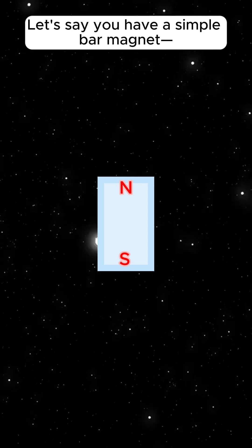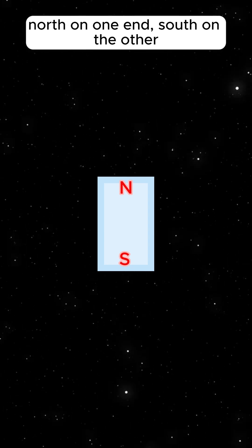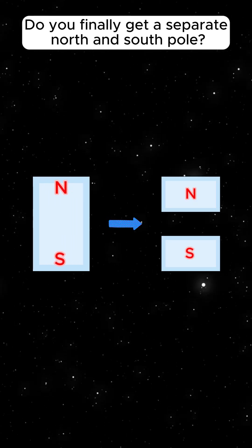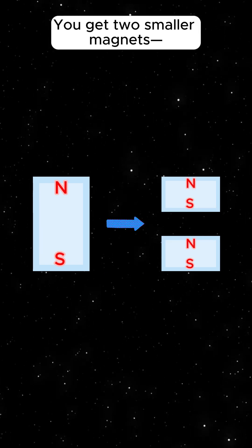Let's say you have a simple bar magnet, north on one end, south on the other. Now cut it in half. Do you finally get a separate north and south pole? Nope. You get two smaller magnets.